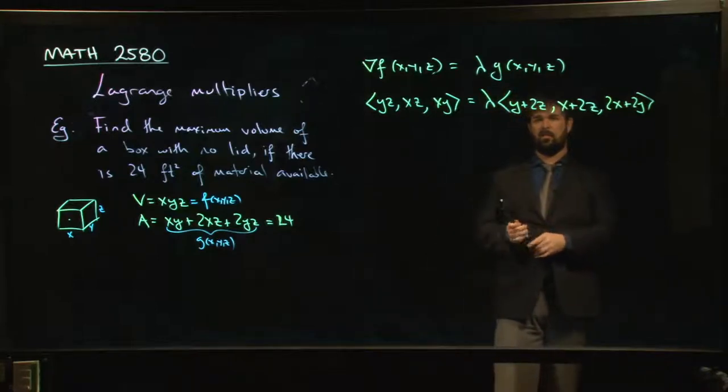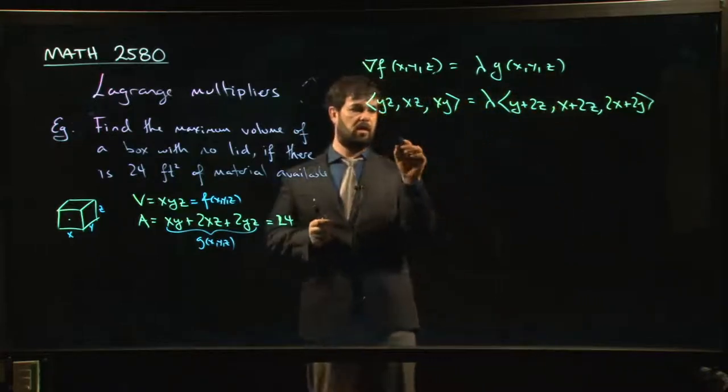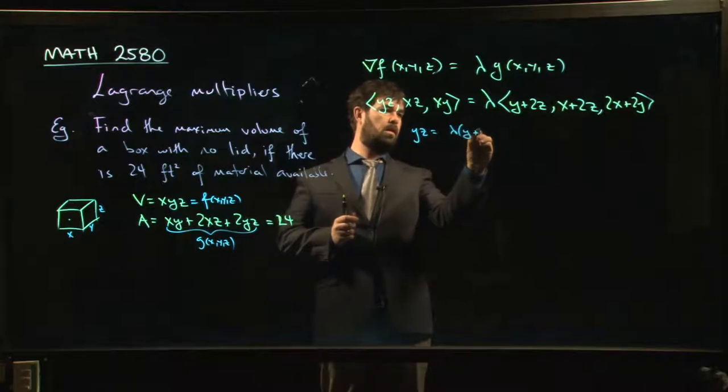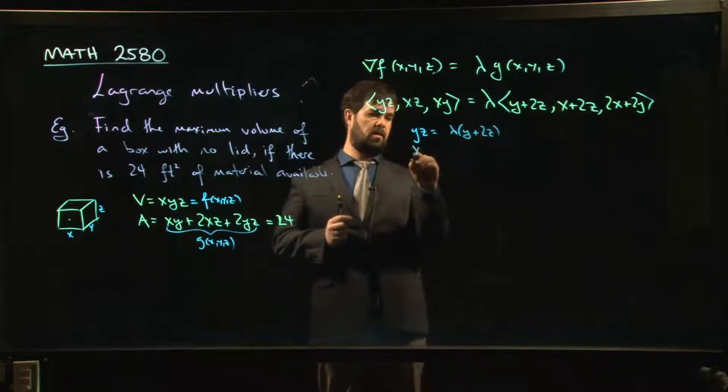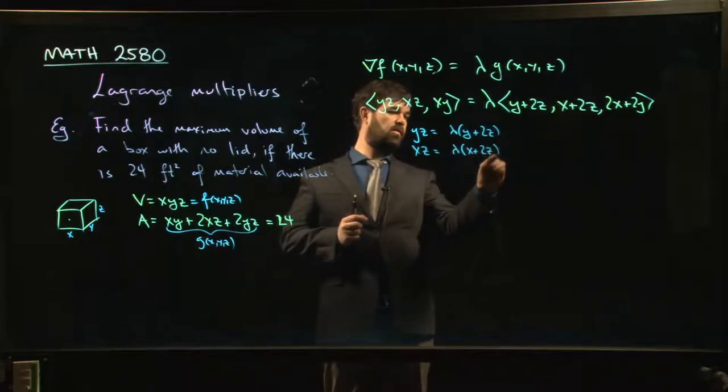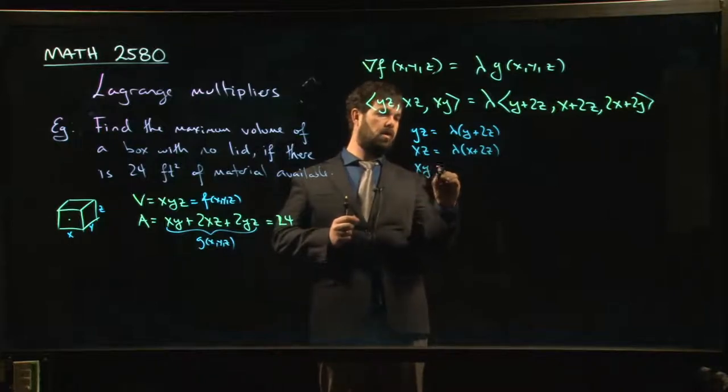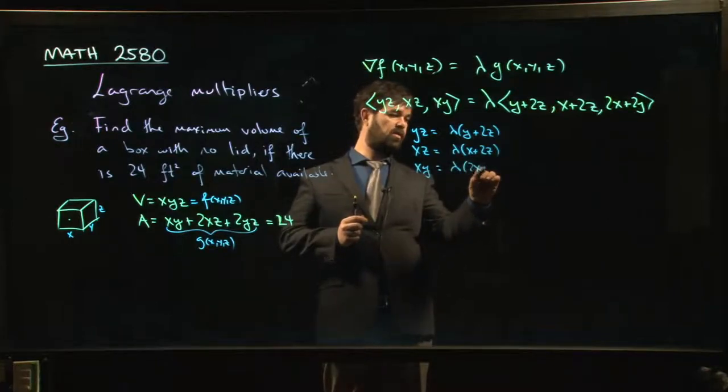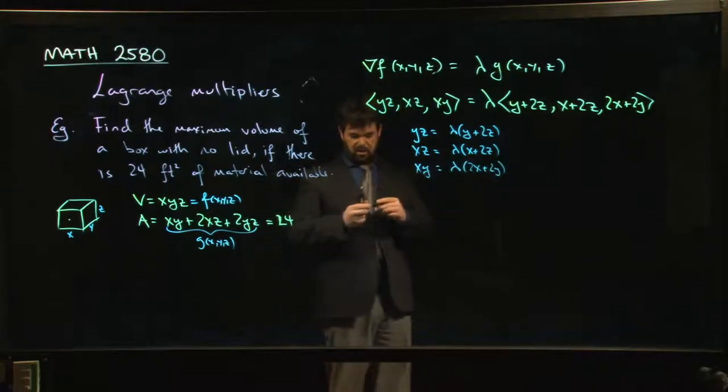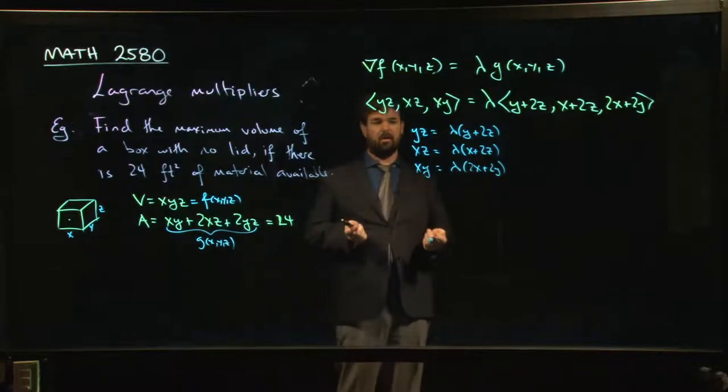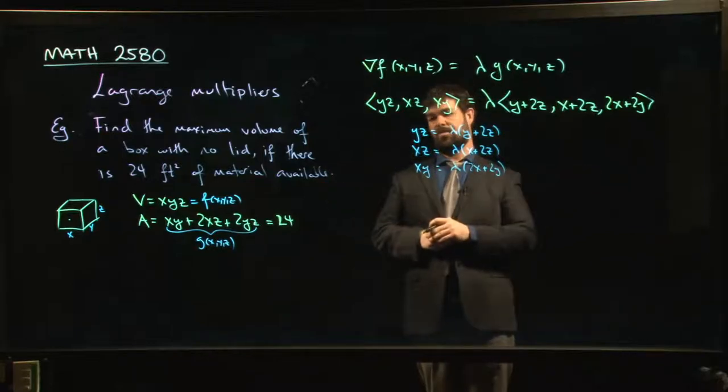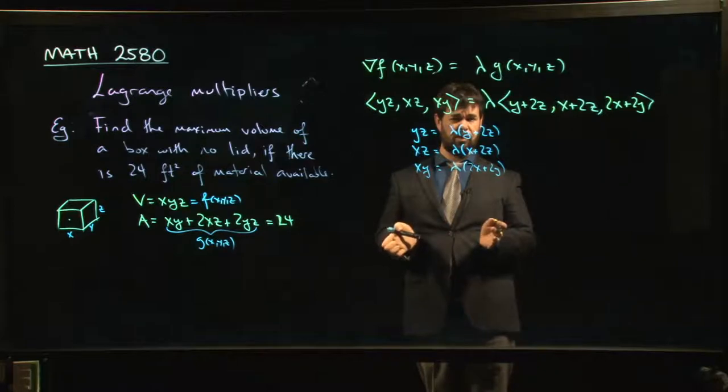So this seems like a bit of a mess, right? We get three equations out of this. We get yz is lambda times y plus 2z. Then we get xz is lambda times x plus 2z. Then we have xy is lambda times 2x plus 2y, right? And here's where you really end up wishing that this was linear algebra, because if it was linear algebra, we'd know how to solve. We'd have a method for solving these, but what do we do here? We have nonlinear equations. We've got to come up with something clever to solve these things.